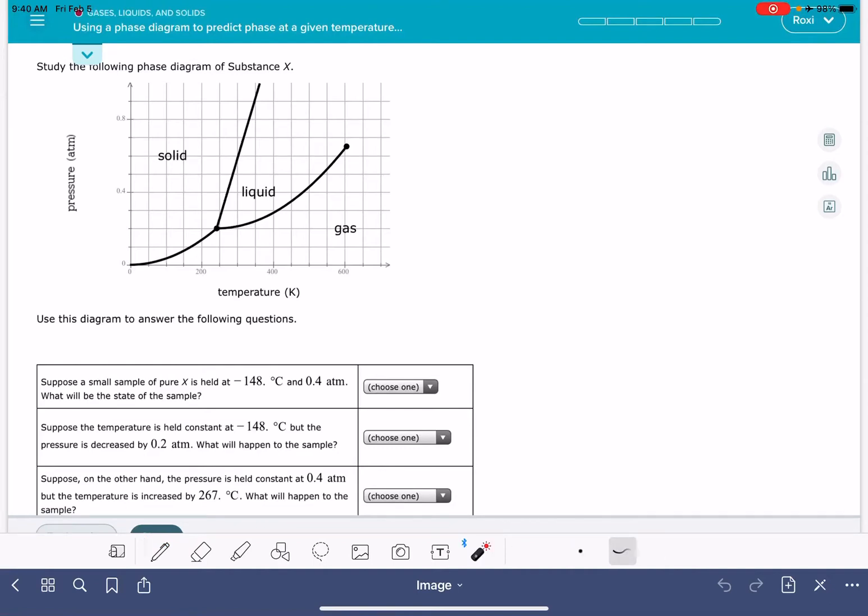In this video, I'm going to show you how to solve the Aleks problem called using a phase diagram to predict the phase at a given temperature and pressure. This is a pretty straightforward question. You have a phase diagram that's already been labeled. The one thing you want to look out for is that the temperatures given to you in this problem are in degrees Celsius, and the phase diagram has temperature in units of Kelvin. So you want to make sure you're doing the necessary conversion between Celsius and Kelvin.